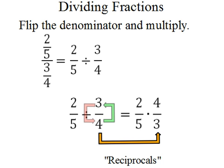By the way, when you flip a fraction, you're really just writing what we call the reciprocal. The reciprocal of 3 fourths is 4 thirds. The reciprocal of 4 thirds is 3 fourths. Anyway, now that we have switched to multiplication, from here you should know what to do.